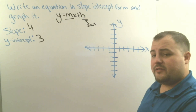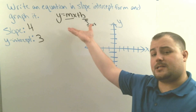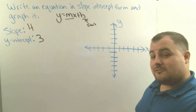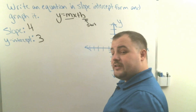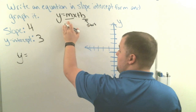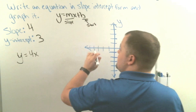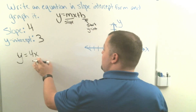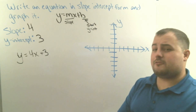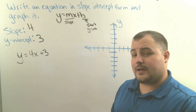In example 2, we're going to write an equation in slope-intercept form for the information given and also graph it. If you feel like you can do it on your own, pause the video, do it, and then we'll go ahead and do it together. We have y equals m, and m is slope. Our slope is 4, so y equals 4x, and b is the y-intercept. So y equals 4x plus 3. This is our equation in slope-intercept form. We need to read two pieces of information — the slope and the y-intercept. That's why it's called slope-intercept form.